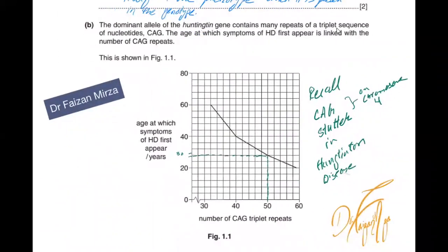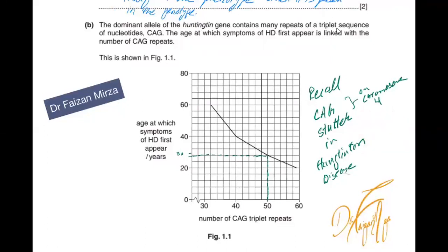Coming to the graph here. The graph shows that the dominant allele of the Huntington gene contains many repeats of the triplet sequence of nucleotide CAG — recall CAG repeats in Huntington disease on chromosome 4. The age at which symptoms first appear is linked with the number of CAG repeats. If the number of CAG repeats is very high, then the disease occurs at a very early age, and if the number of CAG repeats is low, then the disease takes a very long time to manifest itself.